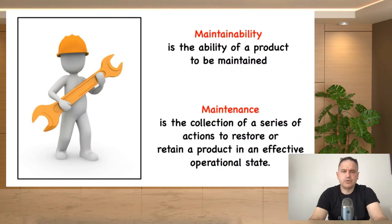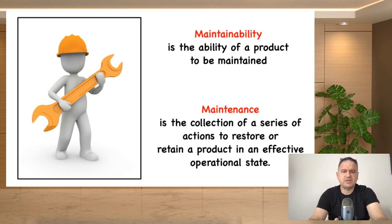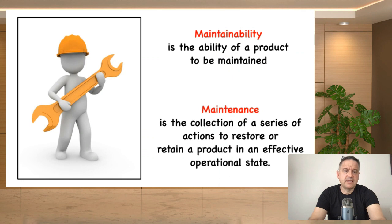My friends, we have two terms. Maintainability is shortly defined as the ability of a product to be maintained. Maintenance is a series of action items to restore or retain a product or system into an effective operational state. As you see, maintainability and maintenance are related to each other, but they are not the same. When we put these two terms together, we will see this type of relationship.